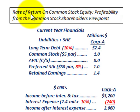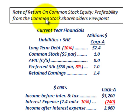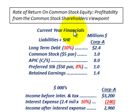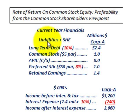What we're going to be going over here is the rate of return on common stock equity, which is really the profitability from the common stock shareholders' viewpoint. We're going to have these current year financials in millions of dollars for Corporation A, and we're going to be looking at their liabilities and their shareholders' equity.